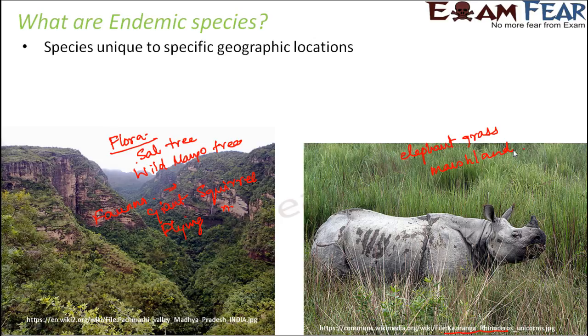So, the conclusion is that when we talk about endemic species, these are species which are unique to a geographic location. For example, the giant flying squirrel is an endemic species of Panchmari National Park.